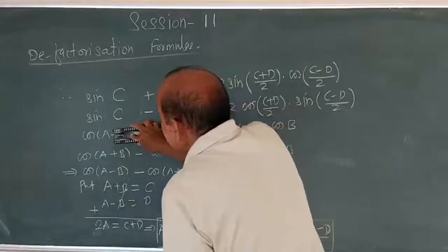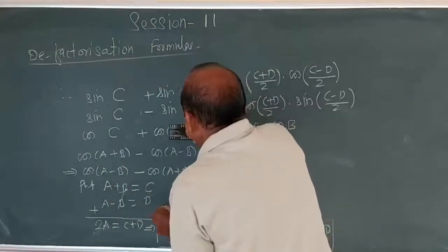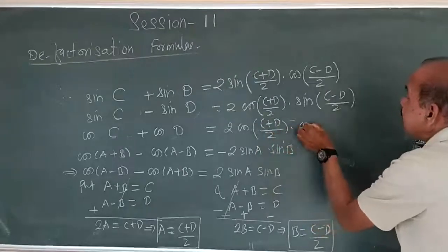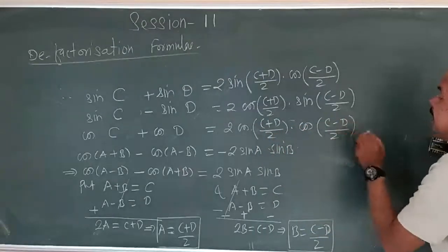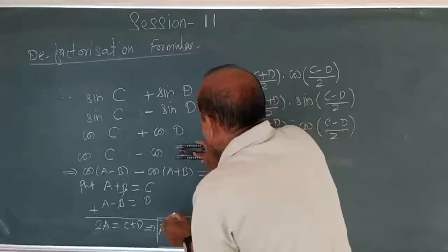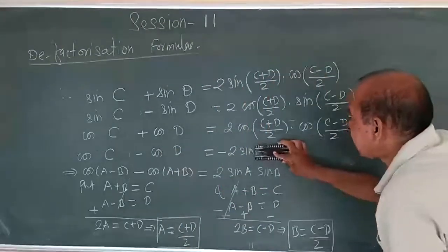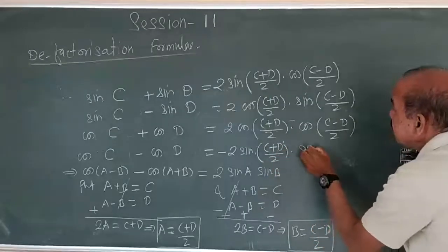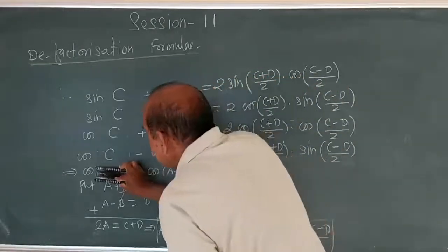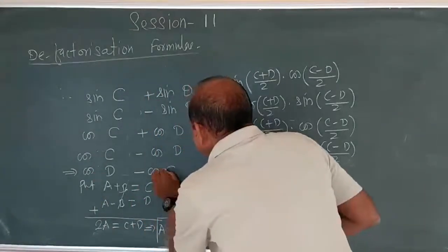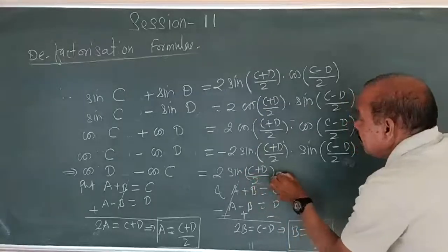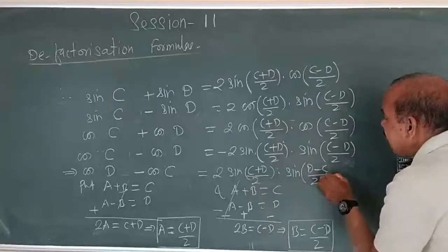Similarly, the second formula: sin A plus B means C, minus sin A minus B means D, again gives 2 times cos A, where A equals C plus D upon 2, into sin B, where B equals C minus D upon 2. Third formula: cos A plus B is C, cos A minus B is D, equals 2 times cos A — A equals C plus D upon 2 — into cos of C minus D upon 2. Fourth formula: cos A plus B minus cos A minus B equals minus 2 times sin A, A equals C plus D upon 2, into sin of C minus D upon 2.